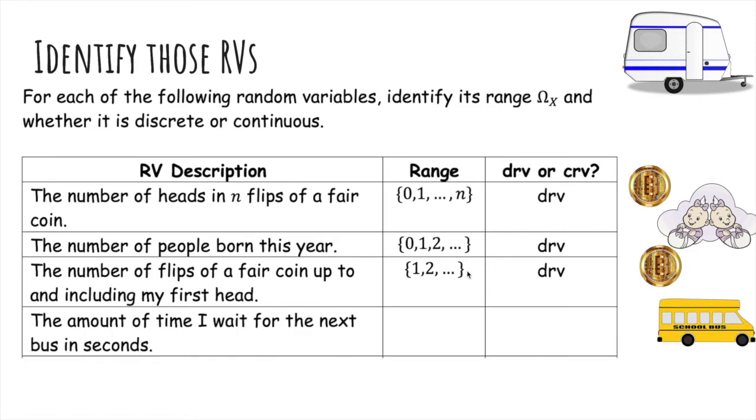The amount of time I wait for the next bus in seconds actually can take on any value in the continuous interval zero to infinity, because you can have decimal waiting times like 3.65 seconds. This is a continuous random variable because it has an interval.